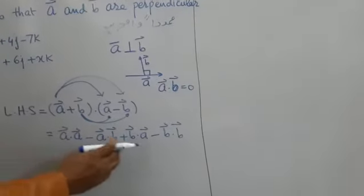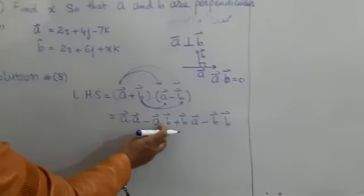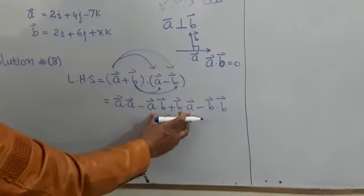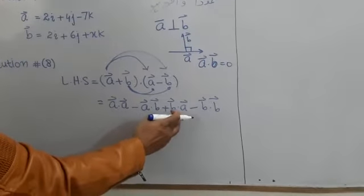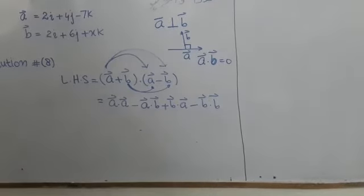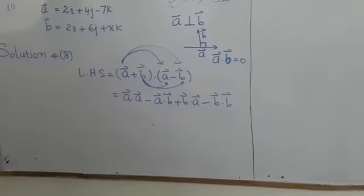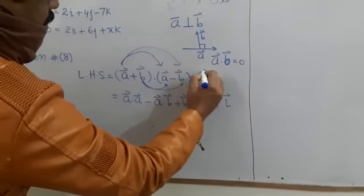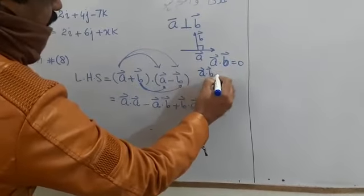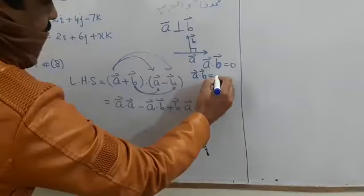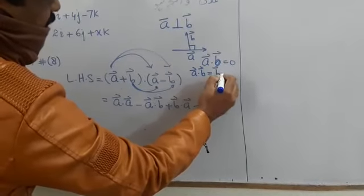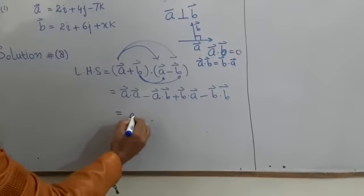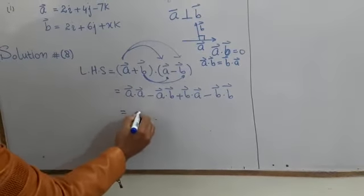Now we have to show that A·A is a scalar quantity. This is the dot product. A·B is equal to B·A by the commutative property. So here A·A.